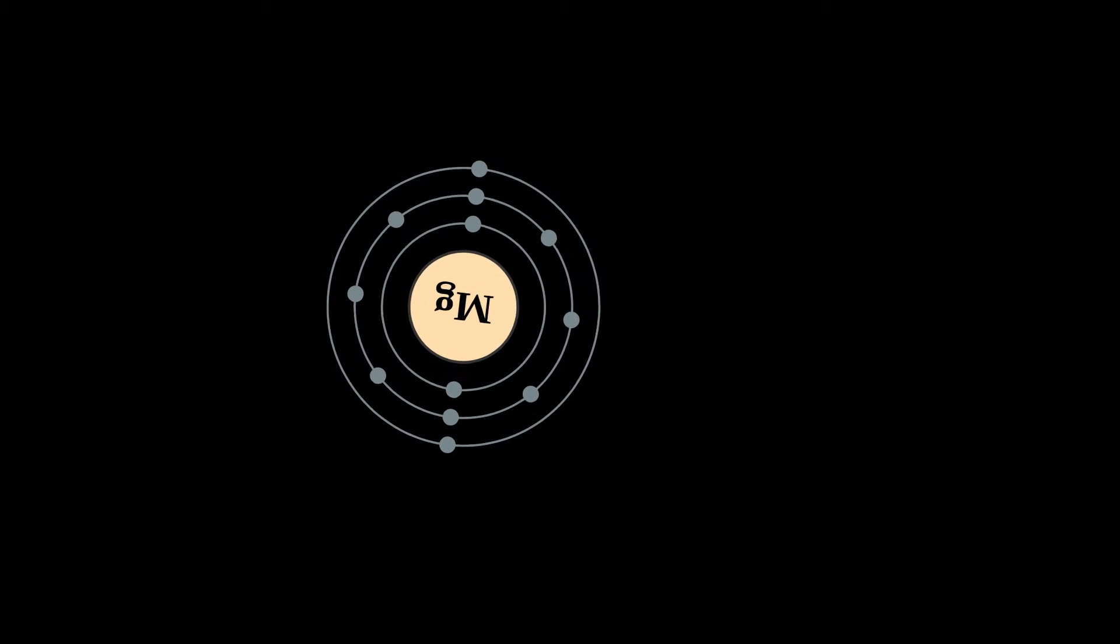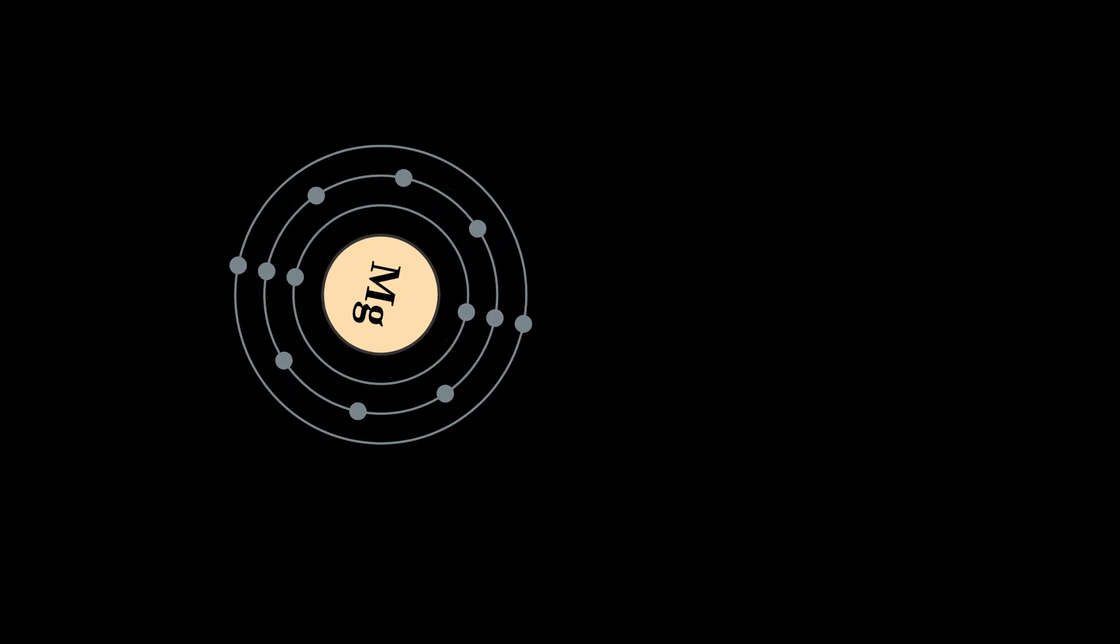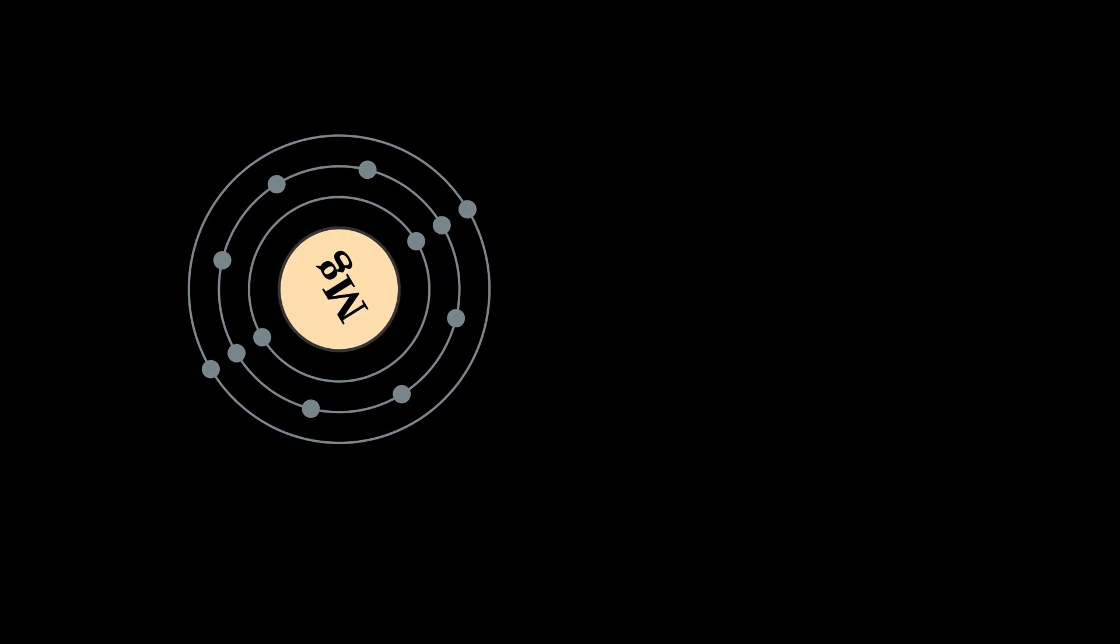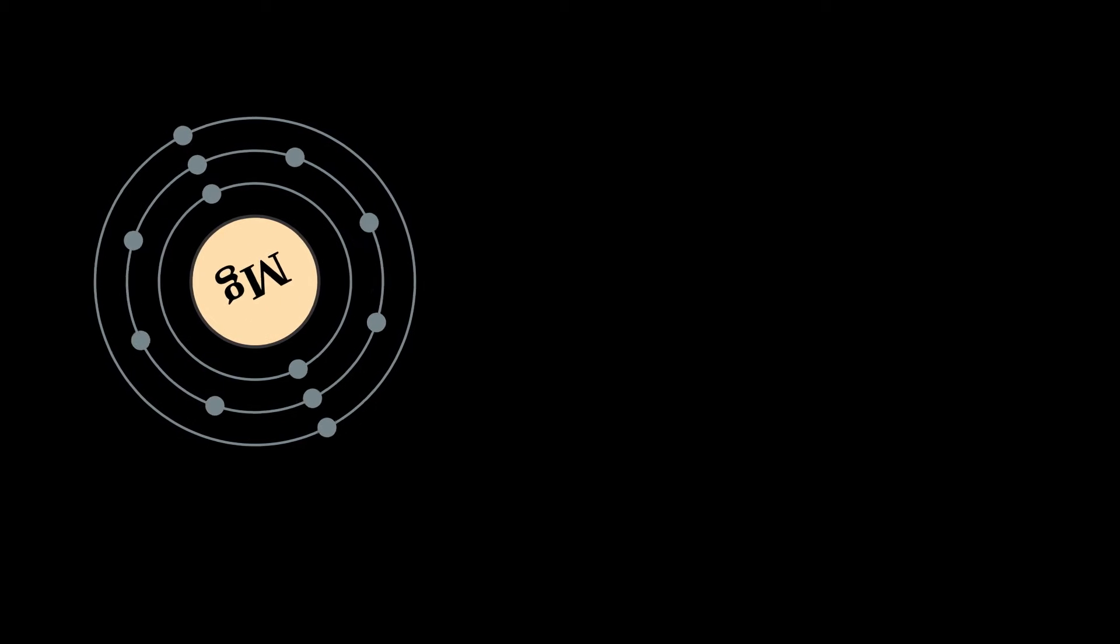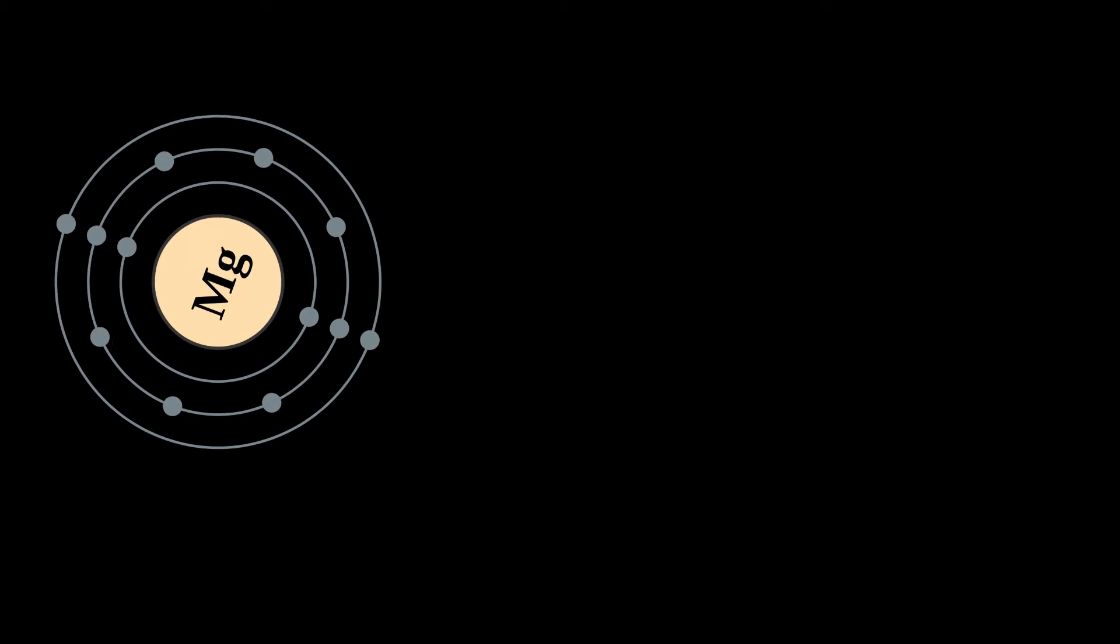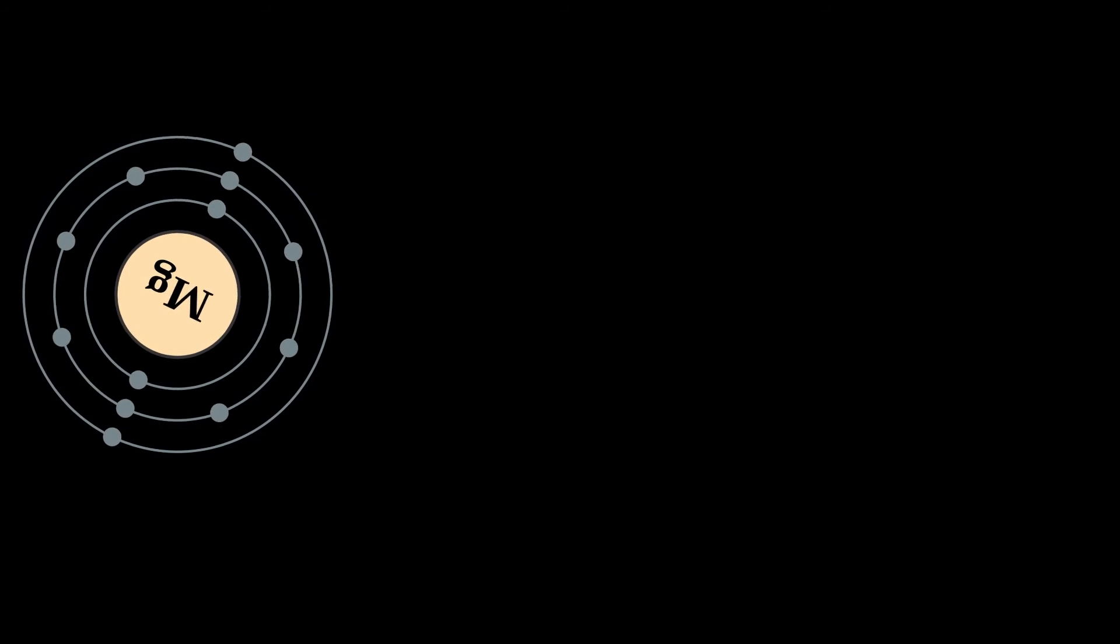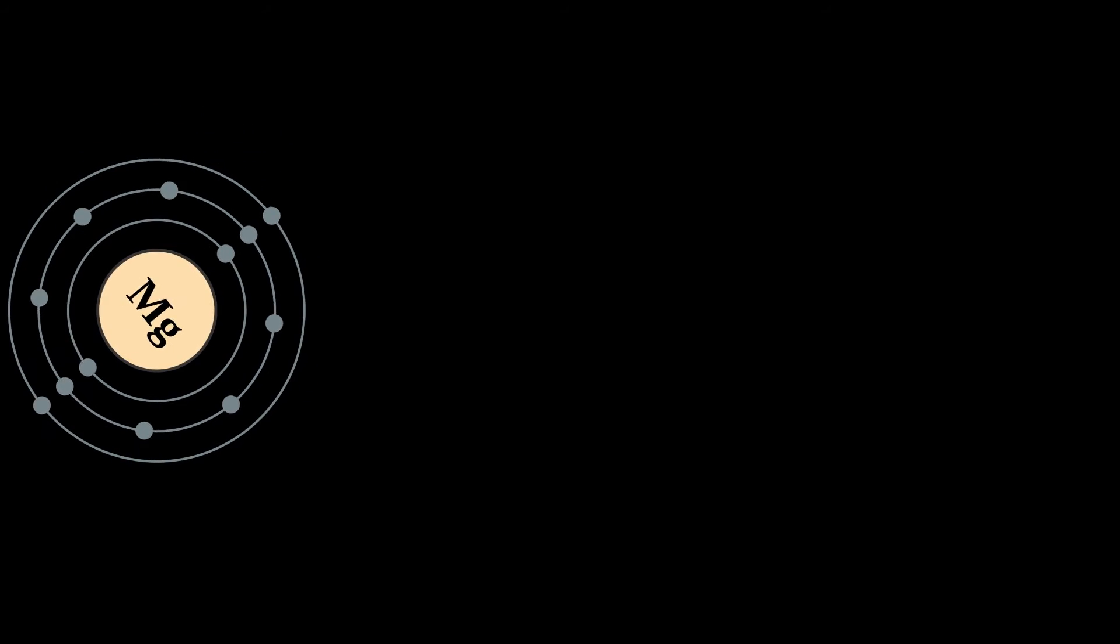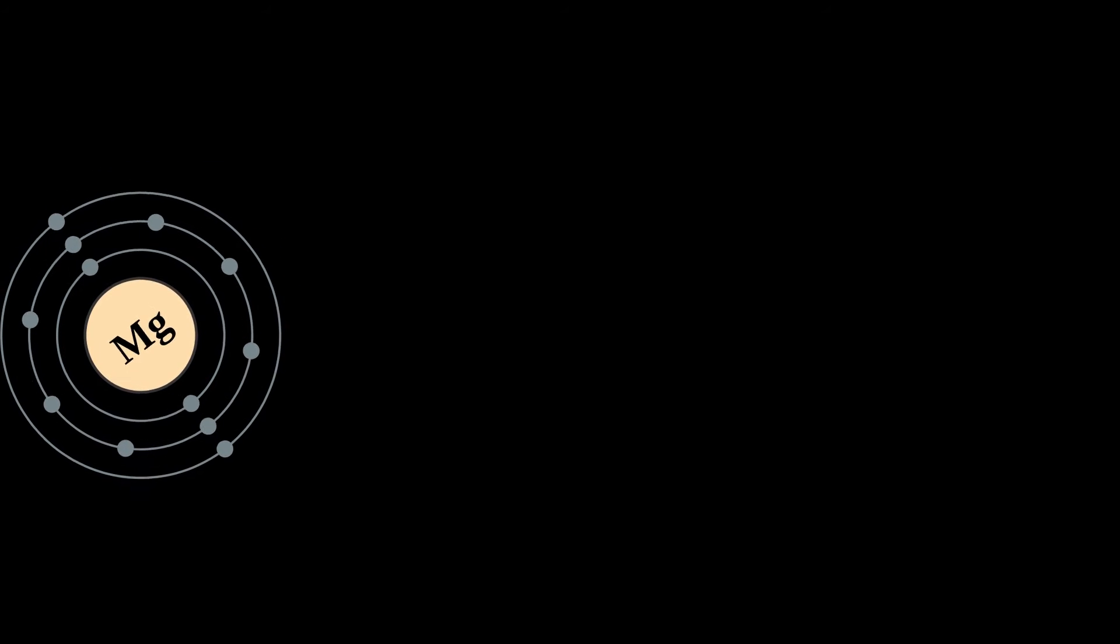Magnesium is the eighth most abundant element in the Earth's crust and the fourth most common element in the Earth after iron, oxygen and silicon, making up 13% of the planet's mass and a large fraction of the planet's mantle. It is the third most abundant element dissolved in seawater after sodium and chlorine.